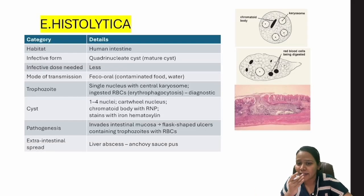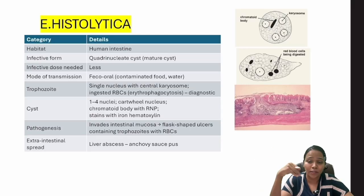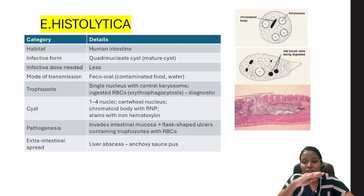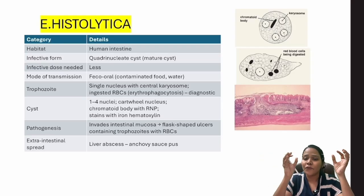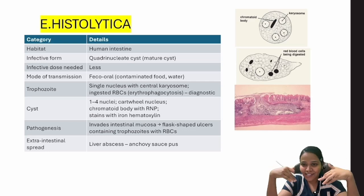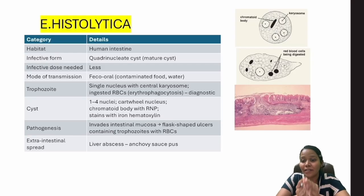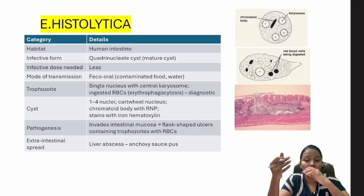Entamoeba histolytica — nature is good even for parasites. Your gastric pH sits at 1.5 to 2, which destroys the majority of bacteria and organisms. So anything that has to infect you must survive that acidity. If taken in trophozoite form, the thin wall gets destroyed by gastric acidity. But if taken as a cyst, the thick wall protects it — and that is nature's beauty.